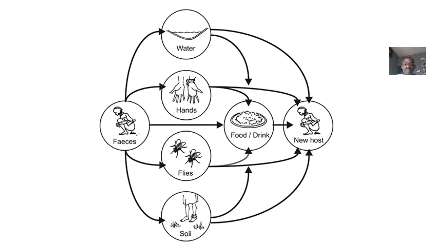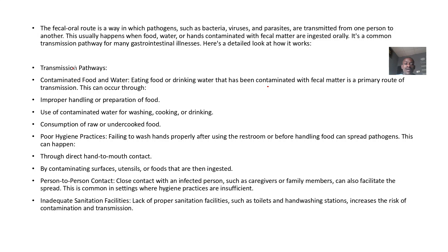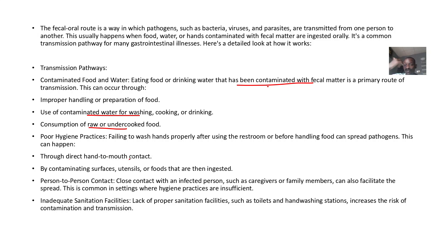From feces, flies can carry pathogens to your food, and then you eat it. Transmission pathways are mainly contaminated food or water — eating food or drinks contaminated with fecal matter. Contamination can occur through improper handling or preparation, sometimes from your own feces if you don't wash your hands after the toilet, or using contaminated water for washing, cooking, or drinking. Other pathways include consuming raw or undercooked food, poor hygiene practices, direct hand-to-mouth contact, contaminated surfaces or utensils, person-to-person contact, and inadequate sanitation facilities.